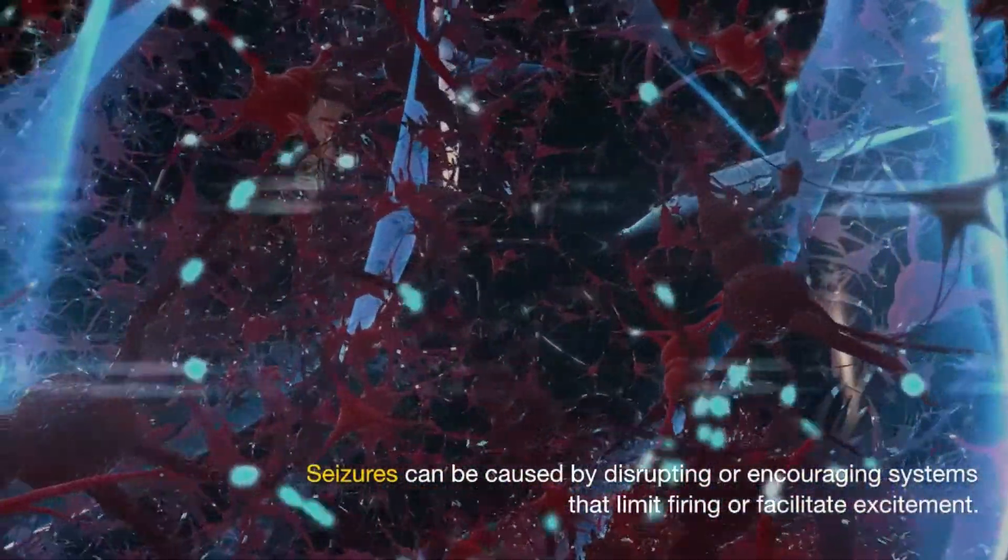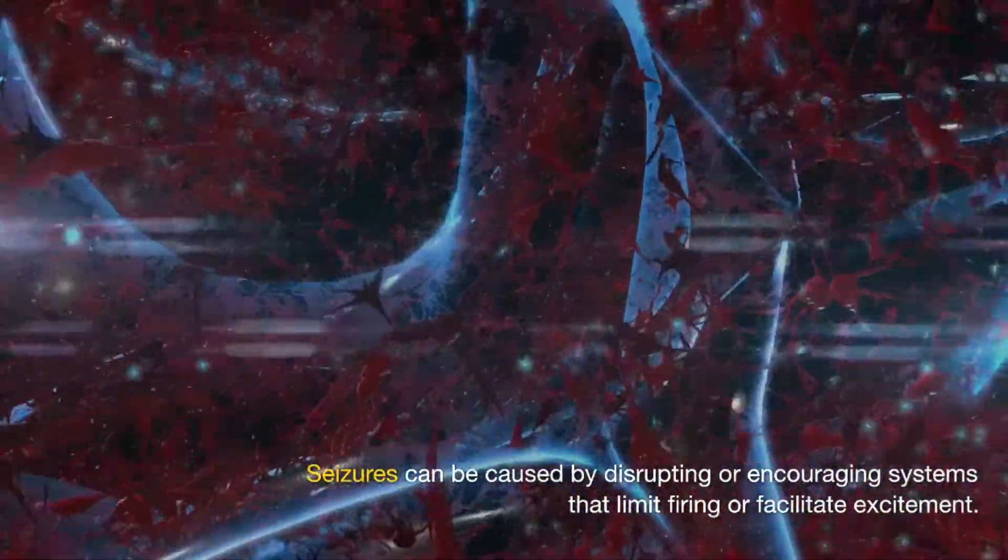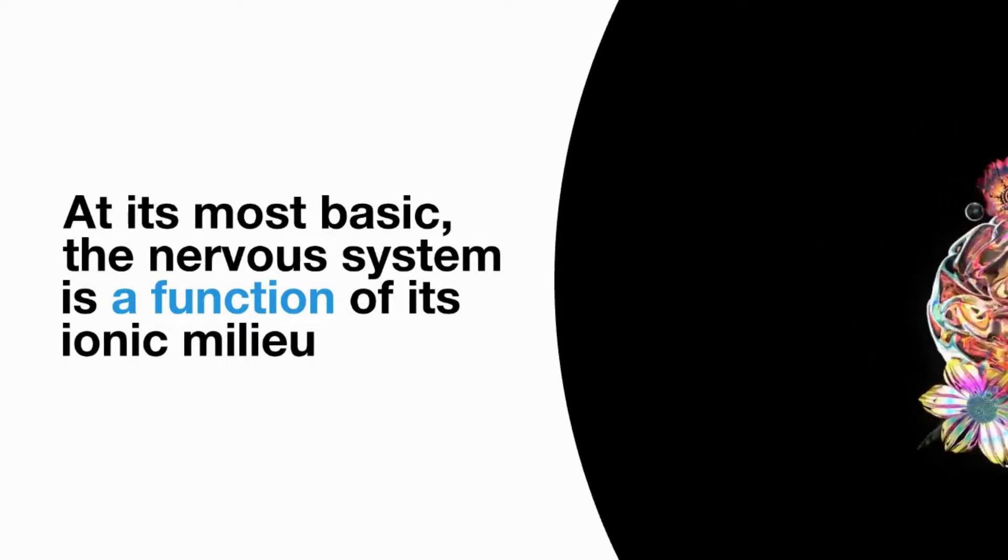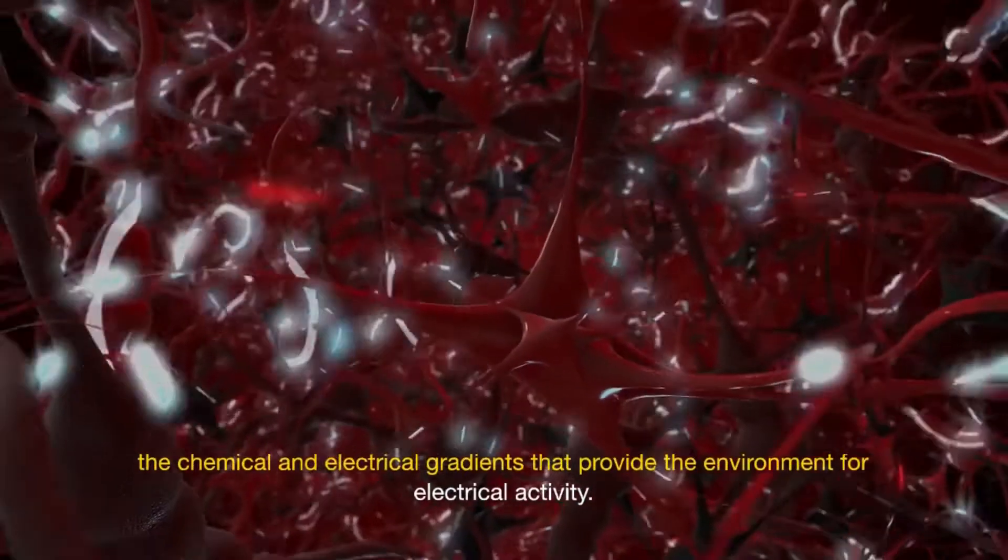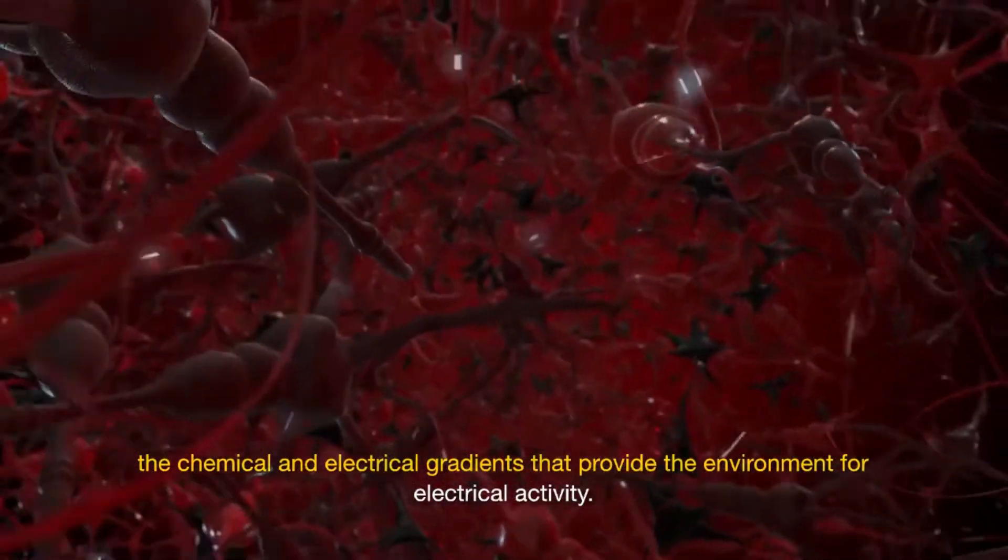Seizures can be caused by disrupting or encouraging systems that limit firing or facilitate excitement. At its most basic, the nervous system is a function of its ionic milieu, the chemical and electrical gradients that provide the environment for electrical activity.